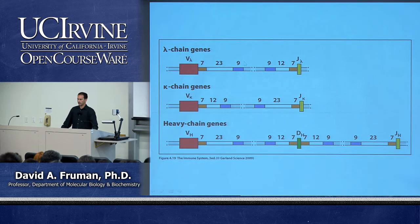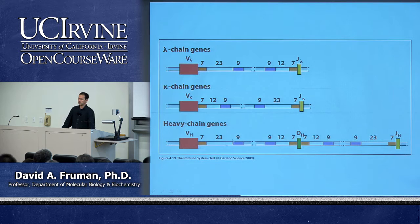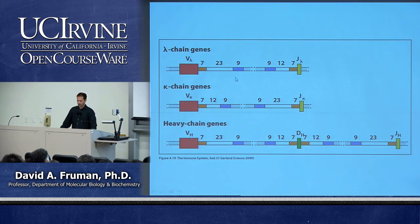The RSS contains sequences known as the heptamer-nonamer sequence: heptamer meaning seven nucleotides (shown in orange) and nonamer meaning nine nucleotides (shown in purple). For every V, J, and D segment, the nucleotide sequence of the heptamer is identical — the same seven nucleotides — and every nonamer is always the same nine nucleotides. These are not transcribed and translated; they're eventually lost during recombination but serve as signal sequences to identify V, J, and D segments for the recombination process.